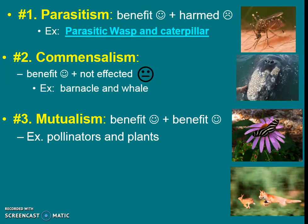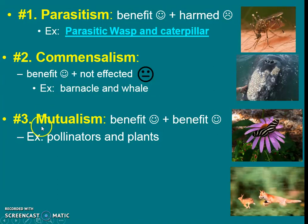Mutualism is when both organisms benefit. Often we talk about pollinators and their plants because the pollinator gets nectar or pollen, which is its food, and the plant gets to pollinate or reproduce, getting more plant offspring. So both things are benefiting. We like to remember this as the word 'mutual,' which means both.